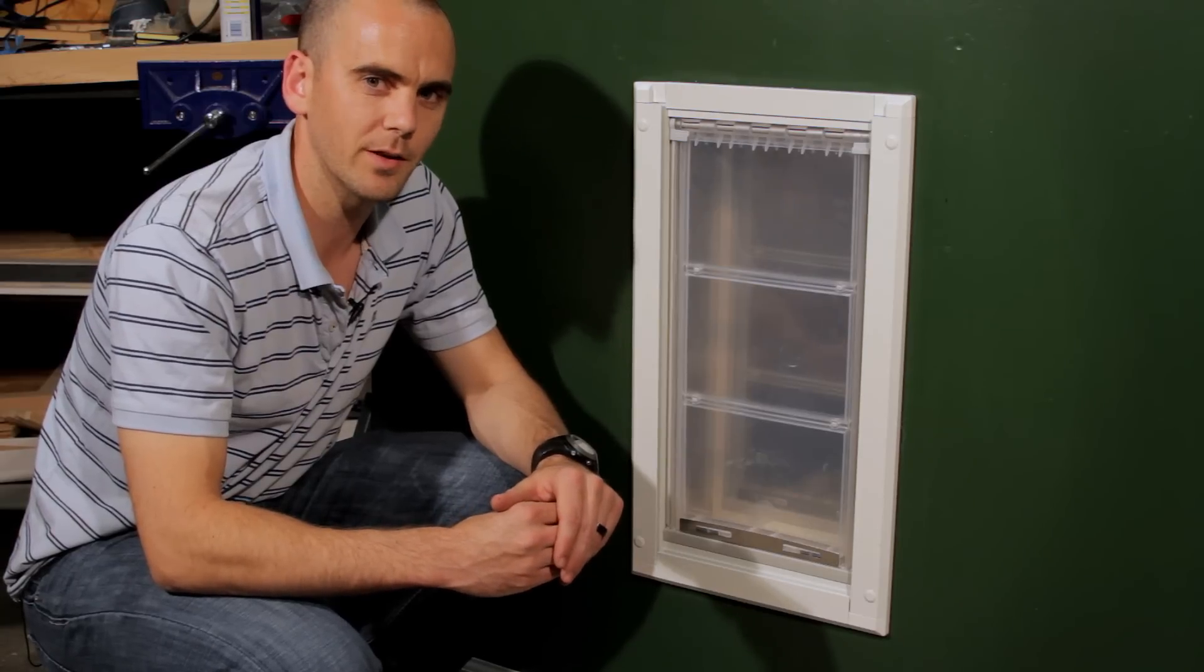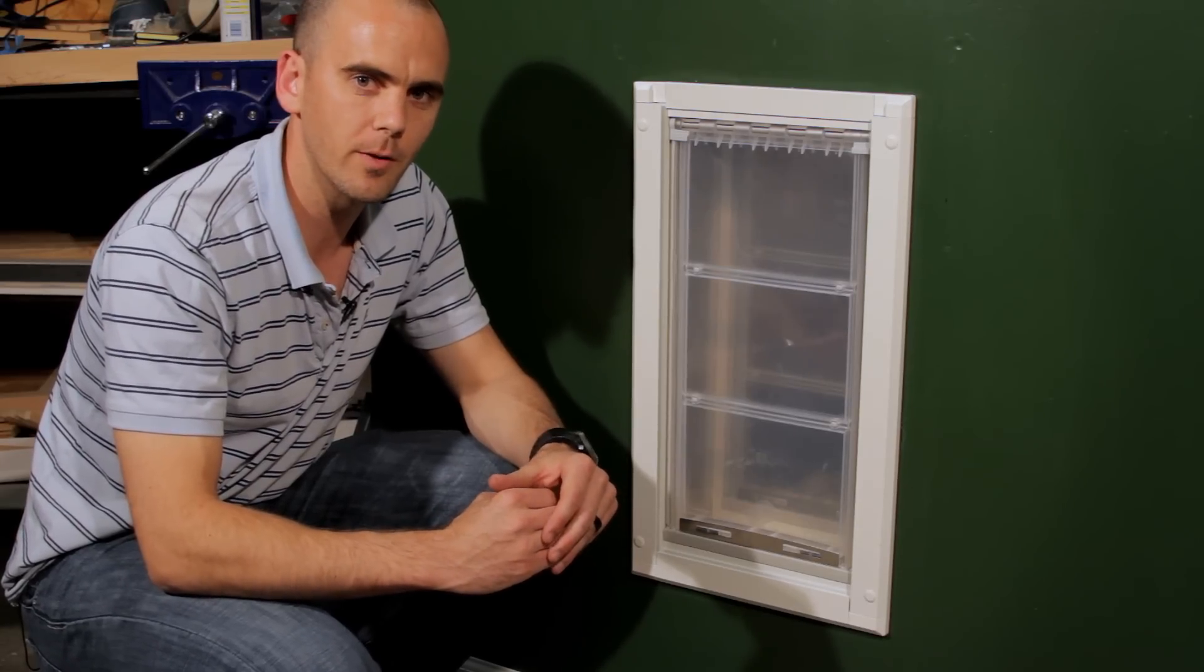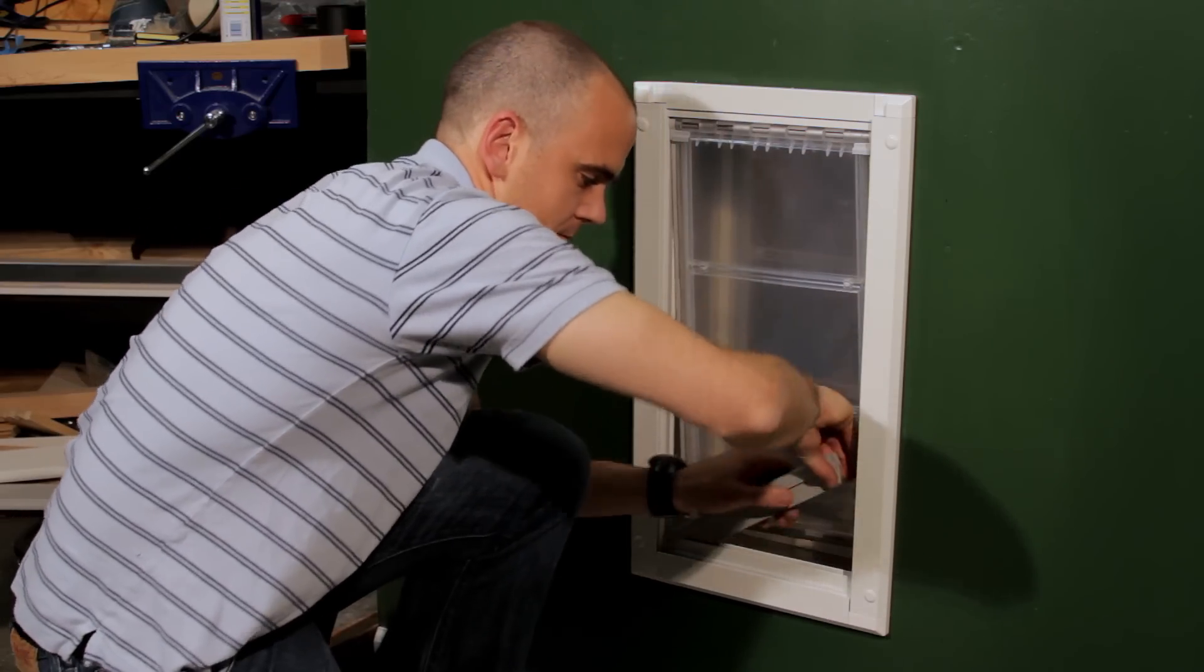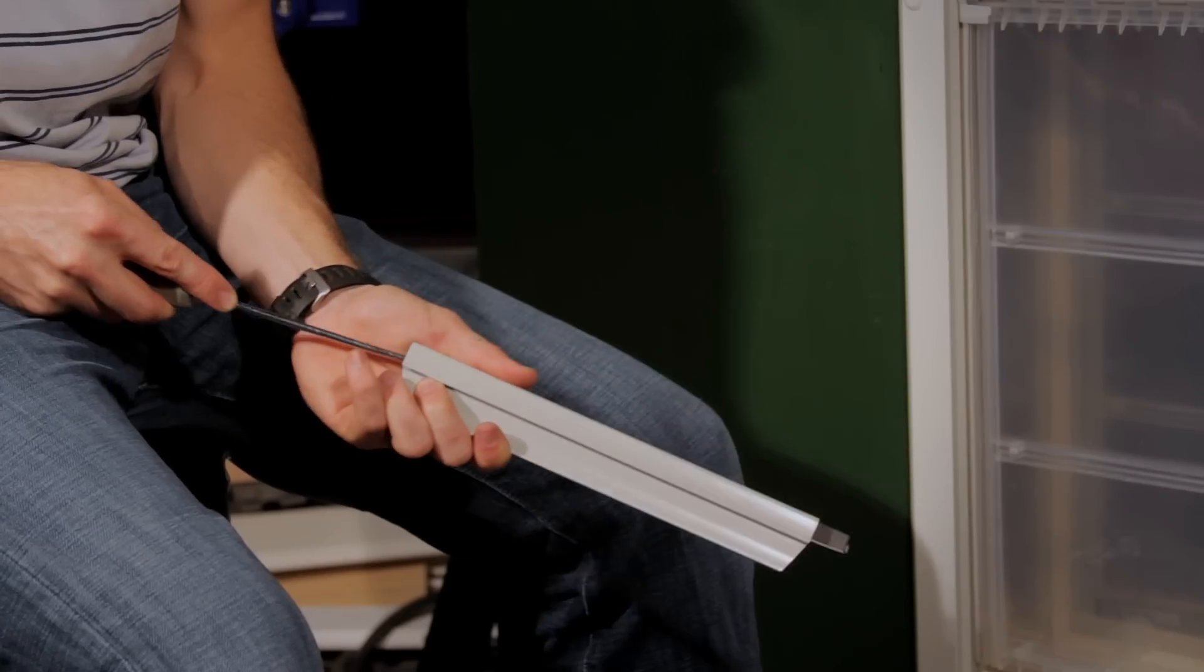Now I'm going to show you how to decrease the magnet strength to make it easier to train your pet. Start by removing the threshold. And again let's take out all the magnets of the threshold.